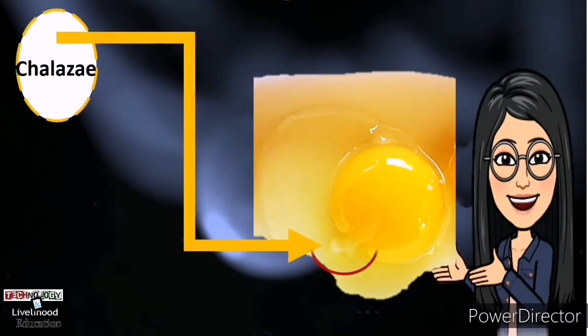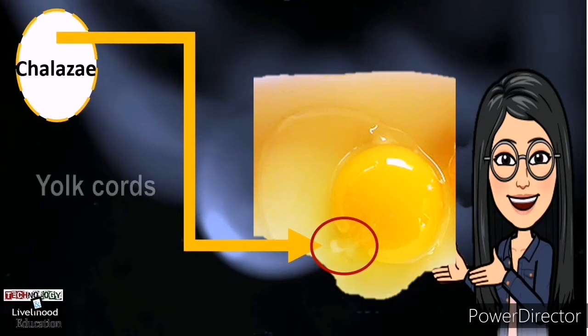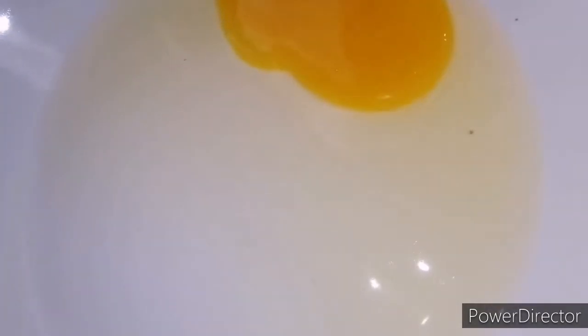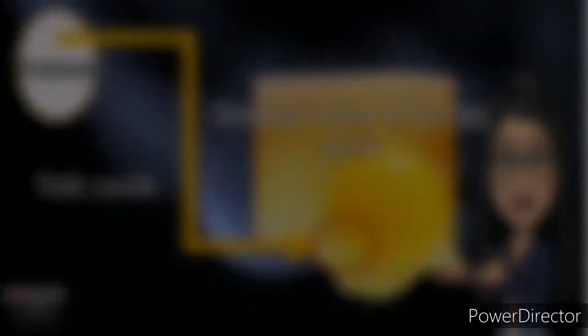Chalaza — It is also called the yolk anchor, an opaque strand of egg white. It holds the yolk in the center of the egg. It attaches the yolk's casing to the membrane lining, then to the egg shell. The more prominent the chalaza, the fresher the egg.